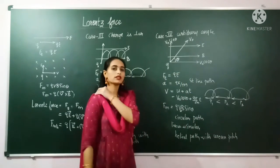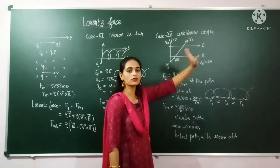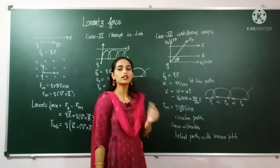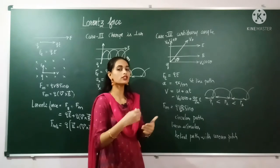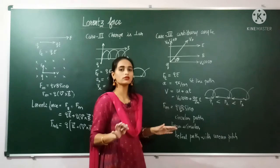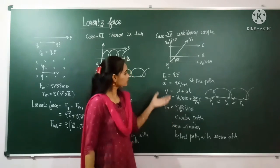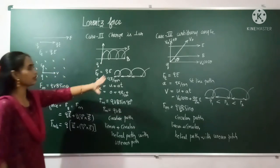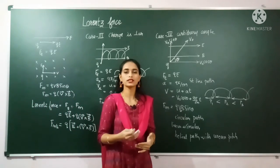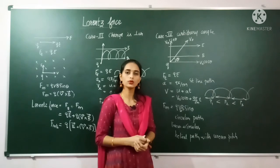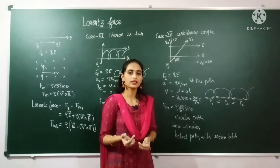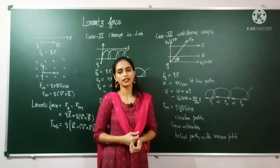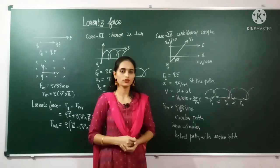An important condition to remember: the velocity of the charge is increased only because of the electric field. The magnetic field is not responsible for the velocity of the charge — it can only change the direction of motion, not increase or decrease the speed. This concludes all four cases. In the next video, we will discuss when electric and magnetic fields are perpendicular to each other, and the very important concept of the velocity selector.